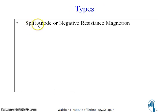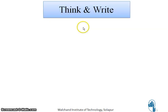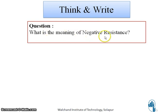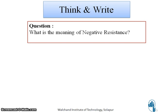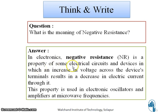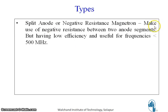Types of magnetrons. The first type is the split anode or negative resistance magnetron. In electronics, negative resistance is the property of some electrical circuits and devices in which an increase in voltage across the device terminal results in a decrease in electric current through it. This property is used in electronic oscillators and amplifiers at microwave frequencies. Negative resistance magnetrons make use of negative resistance between two anode segments but have low efficiency and are useful for frequencies less than 500 MHz.